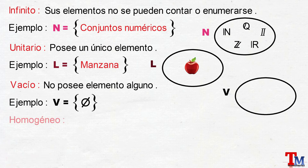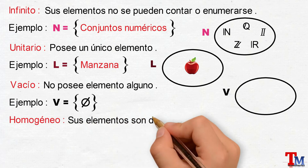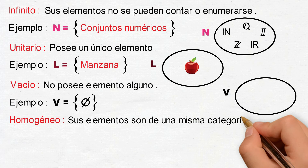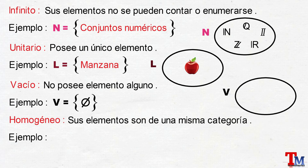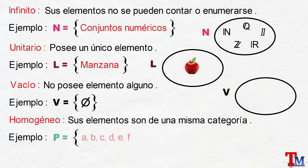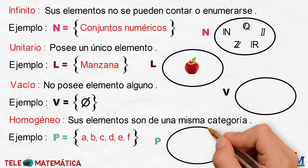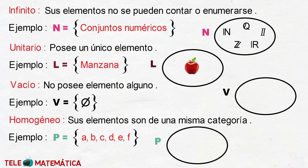Siguiente clasificación, conjunto homogéneo, que se define como: sus elementos son de una misma categoría. Por ejemplo, el conjunto P, definido por las letras de la A a la F. Y cuya representación gráfica sería el conjunto P, donde sus elementos son la letra A, la letra B, la letra C, la letra D, la letra E y la letra F.